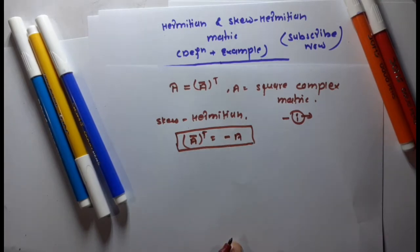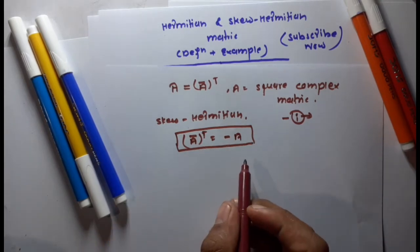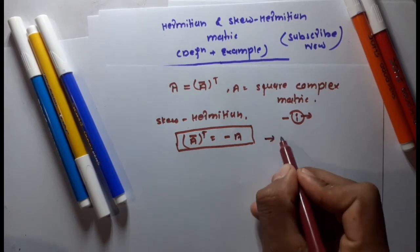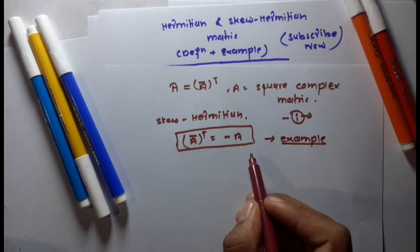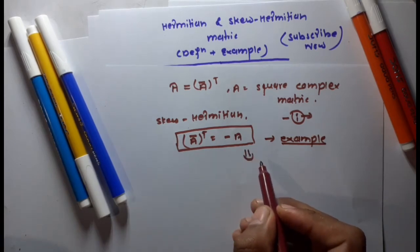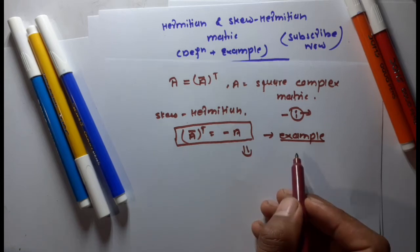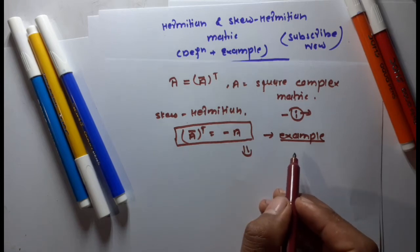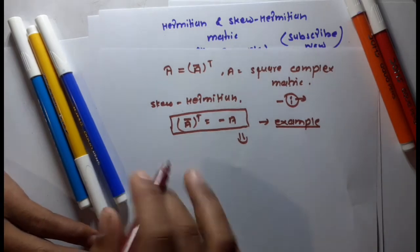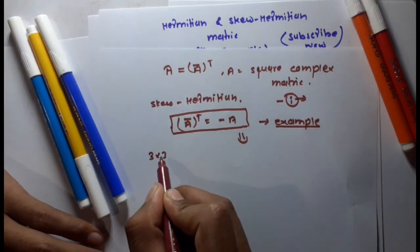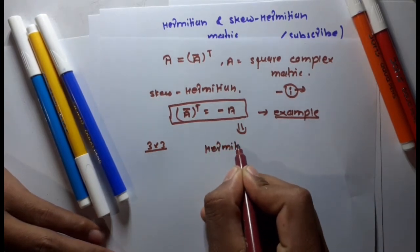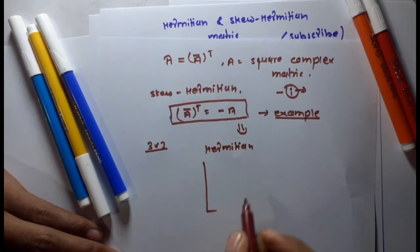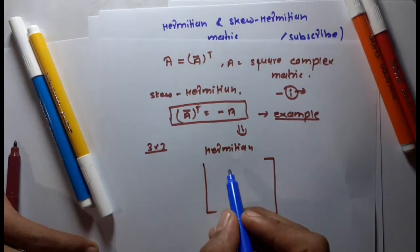The most difficult task in examinations for Hermitian and skew-Hermitian matrices is writing examples. A typical exam question asks you to define Hermitian and skew-Hermitian matrices and write examples. I want to share an idea about how to write these for a three-by-three matrix.